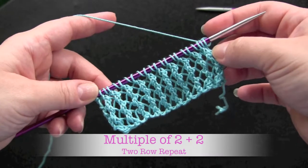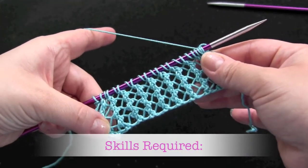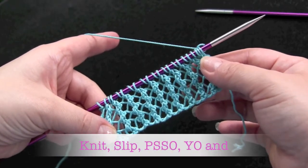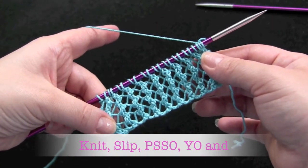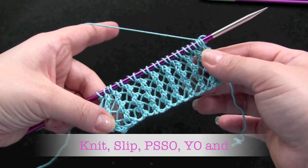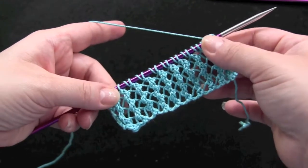This is a two-row repeat worked on a multiple of two plus two. I have 22 stitches for this sample. You'll need to know how to knit, slip stitches knitwise, pass the slip stitch over, purl two together, and make yarn overs.